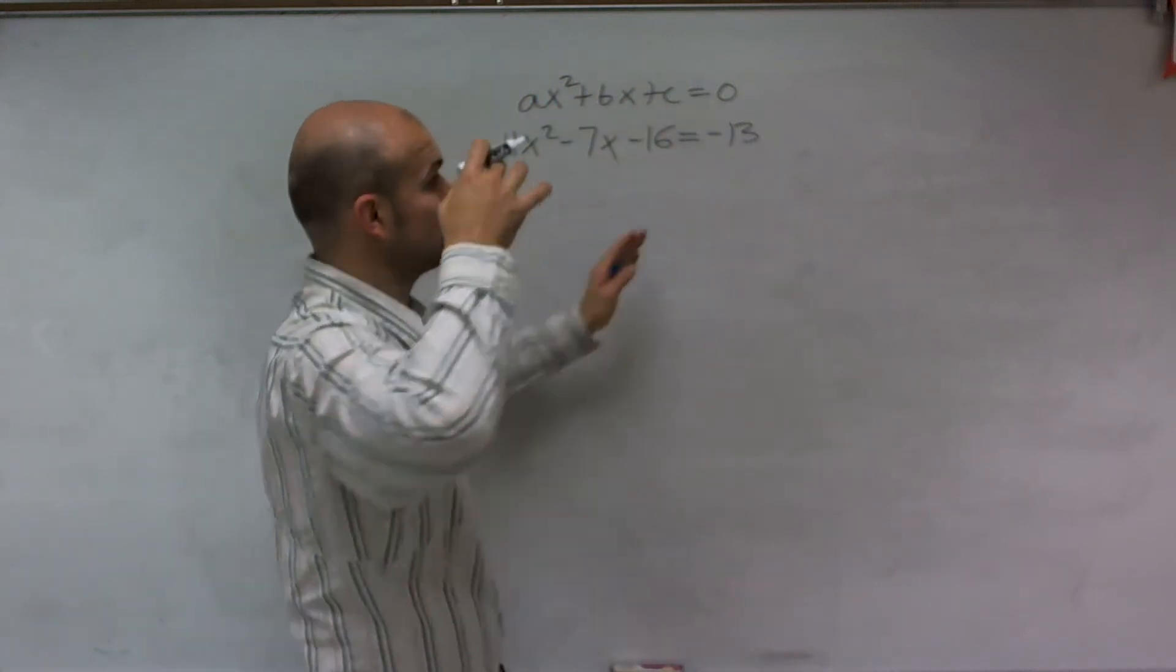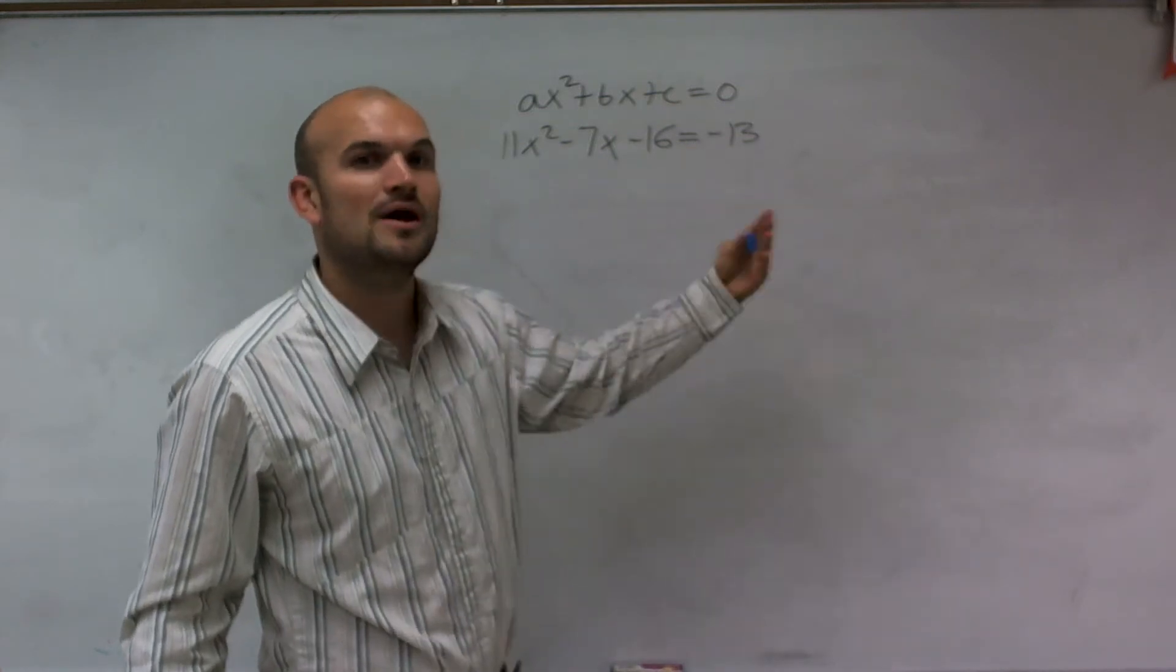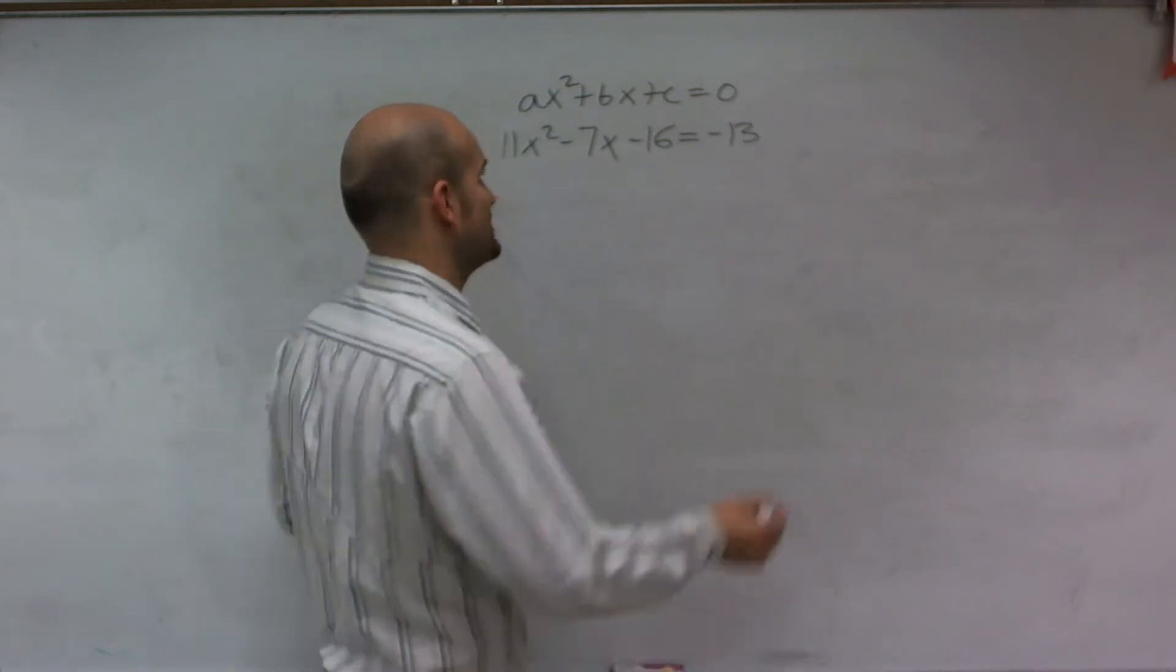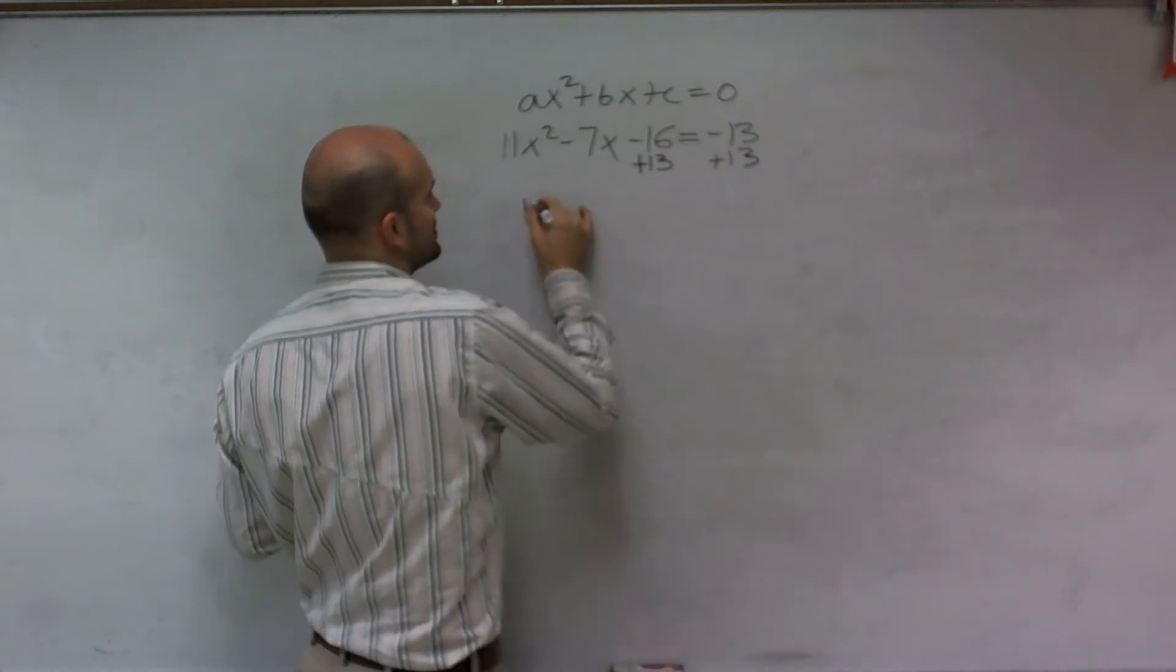Therefore, I want to set it equal to 0. So I don't want to set it equal to negative 13. It has to be set equal to 0 for us to use the quadratic formula, which in turn is actually going to let us find the discriminant. So the first thing I need to do is put it in the format that I would use to find the discriminant.